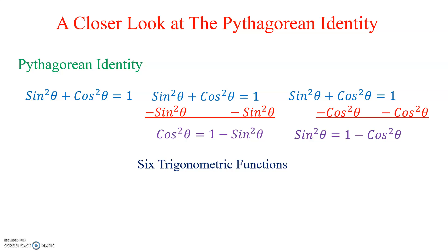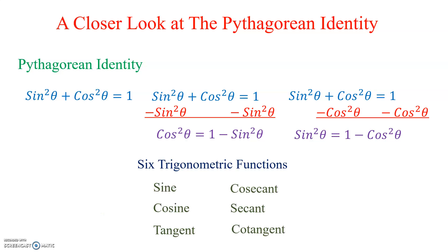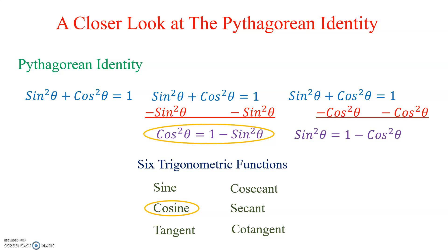Our six trigonometric functions are Sine, Cosine, Tangent, Cosecant, Secant, and Cotangent. So far, we only have versions that isolate Sine and a version that isolates Cosine. We're missing versions that have anything to do with the other four remaining trigonometric functions.